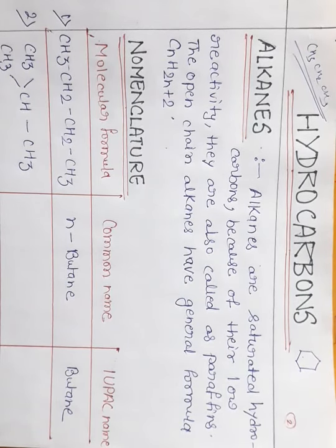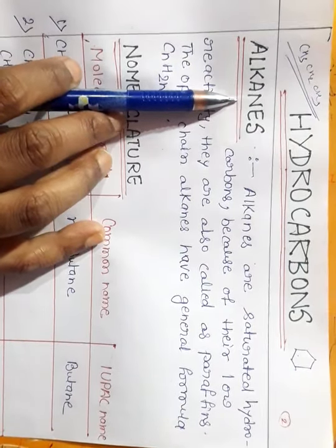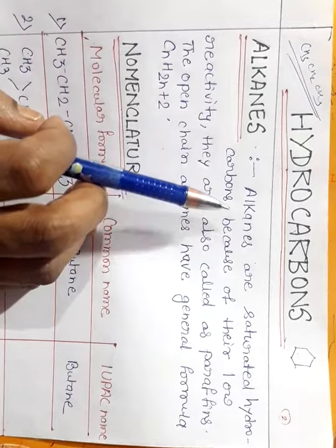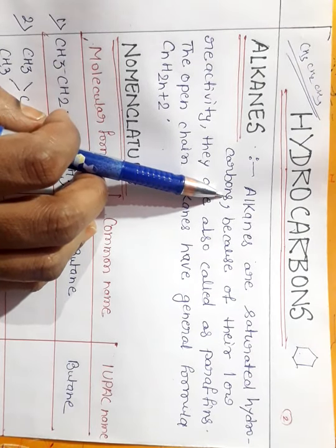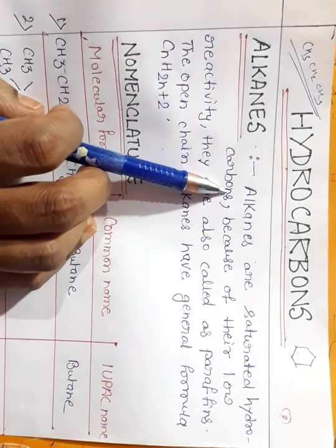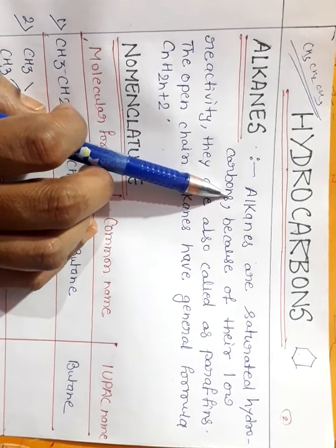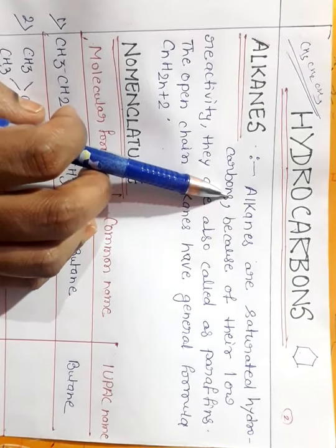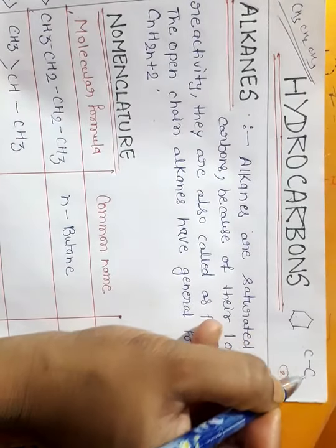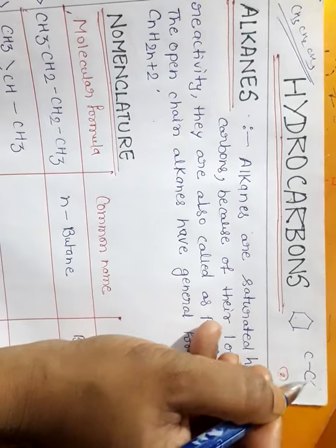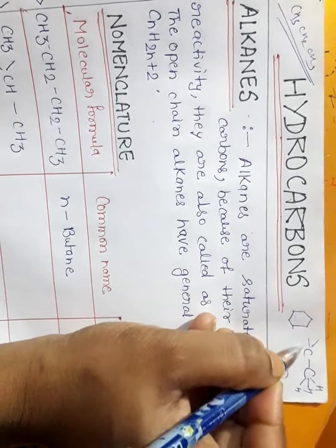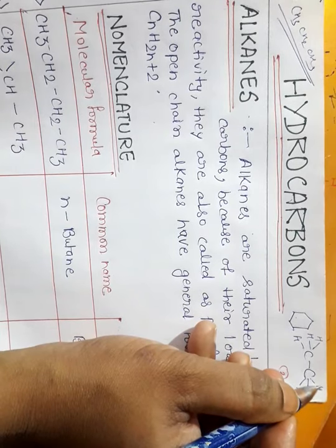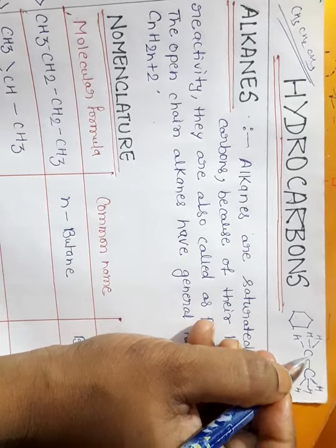Alkanes are saturated hydrocarbons. They contain only carbon–carbon and carbon–hydrogen single bonds. This means carbon atoms are connected to each other and to hydrogen atoms through single bonds only — no double or triple bonds are present in alkanes.